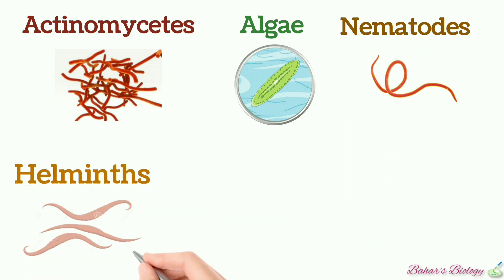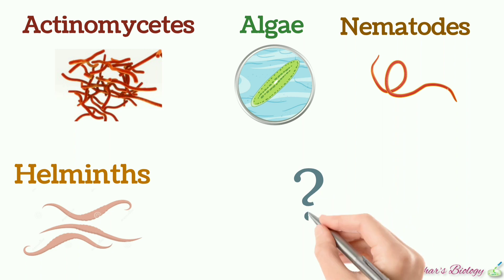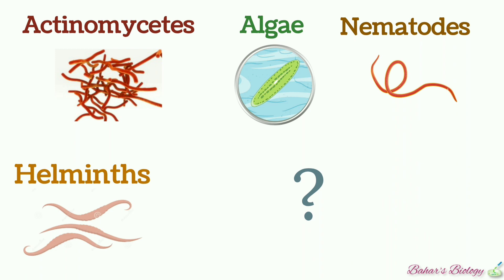The last type is helminths, also called parasitic worms. They are large, macroscopic, and can be seen with the naked eye. Now a question arises: we are studying microscopic organisms, so why do we study helminths in microbiology? The reason is that many species of these worms are identified by their microscopic eggs and larvae — that's why helminths are included in microbiology.